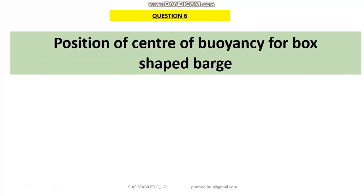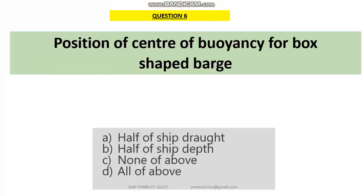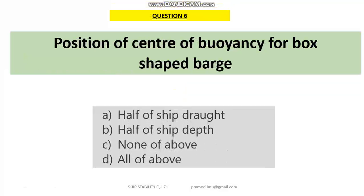Question number 6: the position of center of buoyancy for a box-shaped barge. We know that the center of buoyancy is the center of gravity of the underwater portion of a vessel. So option A — half of the ship's draft — will be the answer.